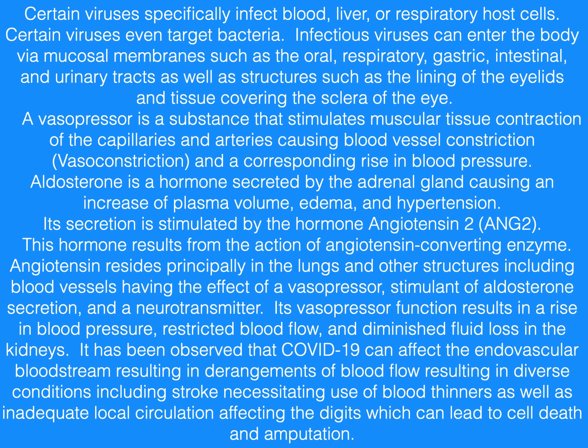A vasopressor is a substance that stimulates muscular tissue contraction of the capillaries and arteries, causing blood vessel constriction and a corresponding rise in blood pressure. Aldosterone is a hormone secreted by the adrenal gland, causing an increase of plasma volume, edema, and hypertension. Its secretion is stimulated by the hormone angiotensin II.